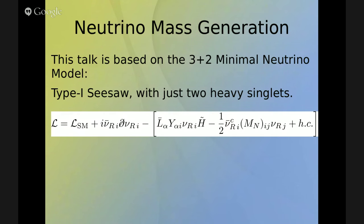This talk is based on a seesaw model, a Type 1 seesaw model called the 3+2 minimal neutrino model. It's basically a Type 1 seesaw with just two heavy fermionic singlets that we call right-handed neutrinos or sterile neutrinos. You can see the Lagrangian from the model right in front of you. Basically, you have the standard model Lagrangian, you add a kinetic term for the sterile neutrinos, a Yukawa coupling between the active neutrinos, the heavy neutrinos, and the Higgs, and finally a Majorana mass term for the sterile neutrinos.